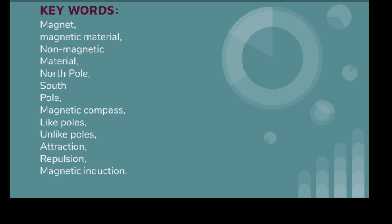The keywords of this chapter — please repeat after me: magnet, magnetic material, non-magnetic material, north pole and south pole, magnetic compass, like poles, unlike poles, attraction, repulsion, and magnetic induction. Please learn these keywords and recite these words — read the words loudly to listen to yourself.